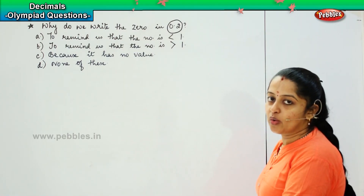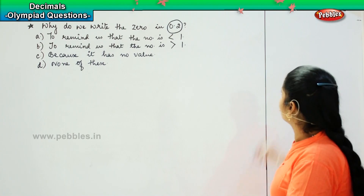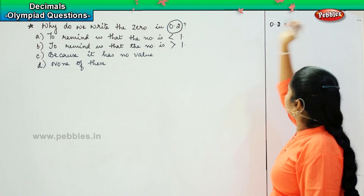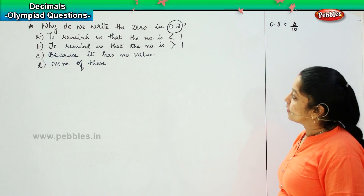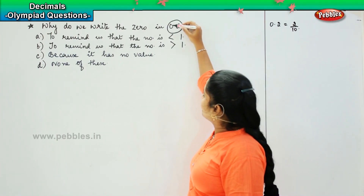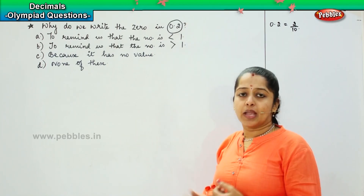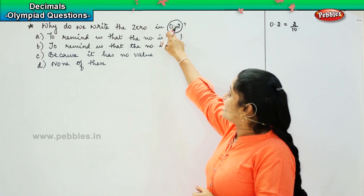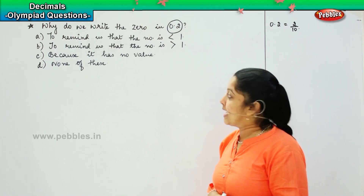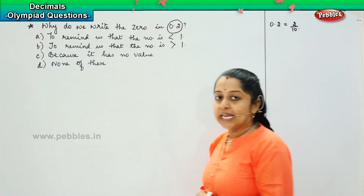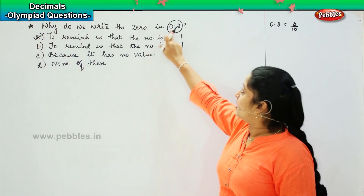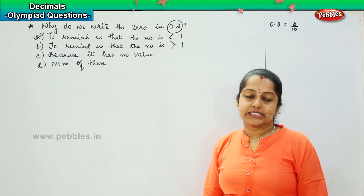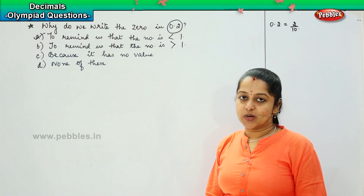What is the answer, children? 0.2 can be written as 2 by 10. It reminds us that whenever we put a zero and a point, anything which is after the decimal point means the concerned value is less than the given number. Here it is 0.2, which means it reminds us that the number is less than 1, because the whole number figure is 0. When it is given as 0, the value of that number is lesser than 1.